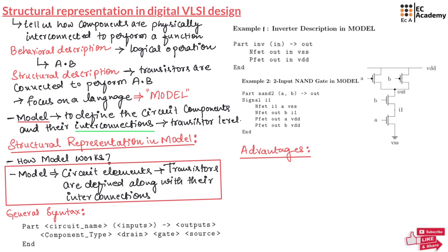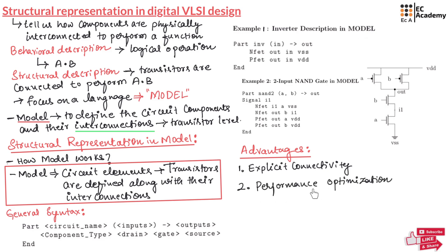Why do we use structural representation? Let us look at some key advantages. First is explicit connectivity — you define the exact transistor-level structure so there is no confusion about how the circuit is built. Second is performance optimization — you can alter parameters like transistor size or capacitance to optimize the speed and power of the digital circuit.